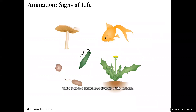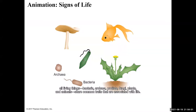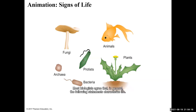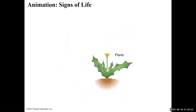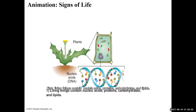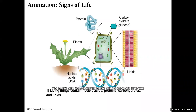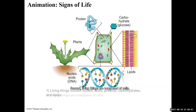While there is tremendous diversity of life on Earth, all living things — bacteria, archaea, protists, fungi, plants, and animals — share common traits associated with life. No single definition applies to all forms of life, so instead of defining life we can only characterize it. Most biologists agree that living things contain nucleic acids, proteins, carbohydrates, and lipids. The nucleic acid DNA — deoxyribonucleic acid — is especially important because DNA molecules can be replicated, enabling organisms to reproduce themselves.